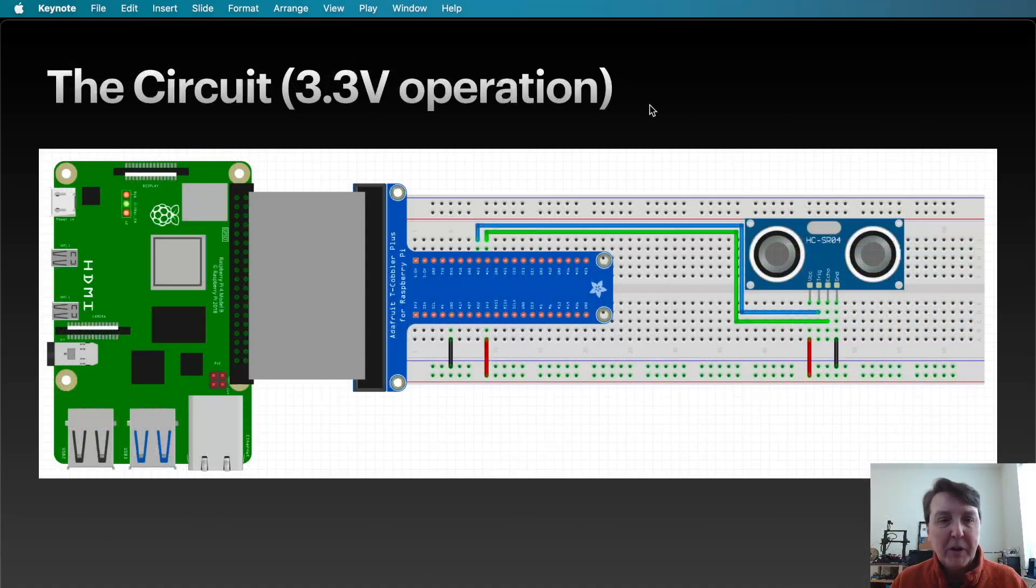Here's the circuit for 3.3 volt operation. We'll connect up to the Raspberry Pi extension board and we'll pull the 3.3 volts off of the Raspberry Pi and create a ground rail. We have a power and ground rail here which we'll use to power and ground the sensor. And then the trigger and echo pin will connect back into GPIO pins on the Raspberry Pi. Pretty simple for a 3 volt operation.